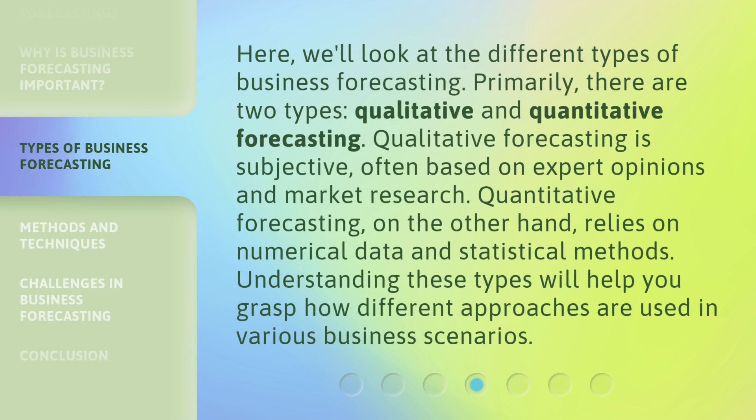Here, we'll look at the different types of business forecasting. Primarily, there are two types: qualitative and quantitative forecasting. Qualitative forecasting is subjective, often based on expert opinions and market research. Quantitative forecasting, on the other hand, relies on numerical data and statistical methods. Understanding these types will help you grasp how different approaches are used in various business scenarios.